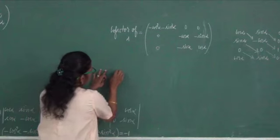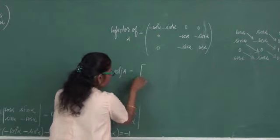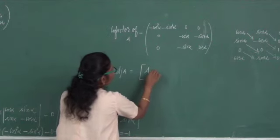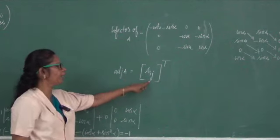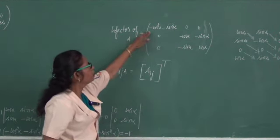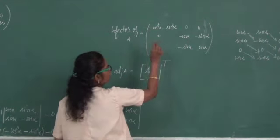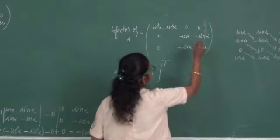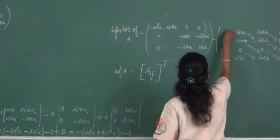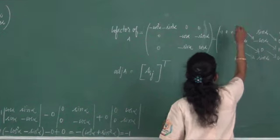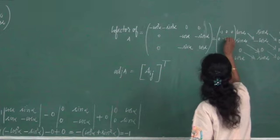Adjoint of A is equal to the transpose of the cofactor. Cofactor is denoted by capital Aij. We found the cofactor, and now we write its transpose. Adjoint of A equals: first row minus 1, 0, 0; second row 0, minus cos alpha —